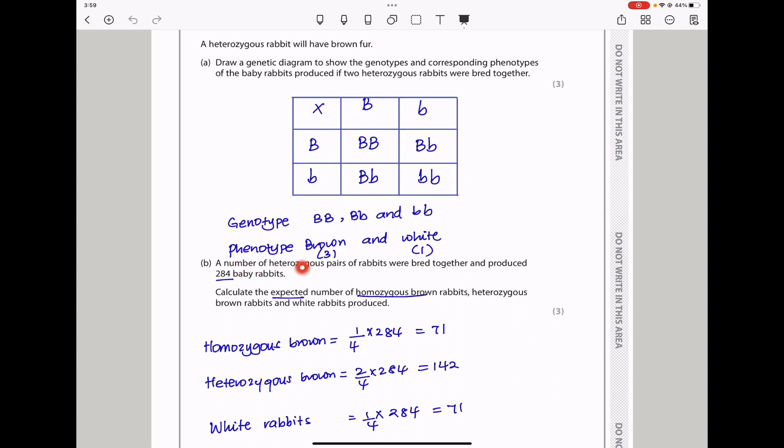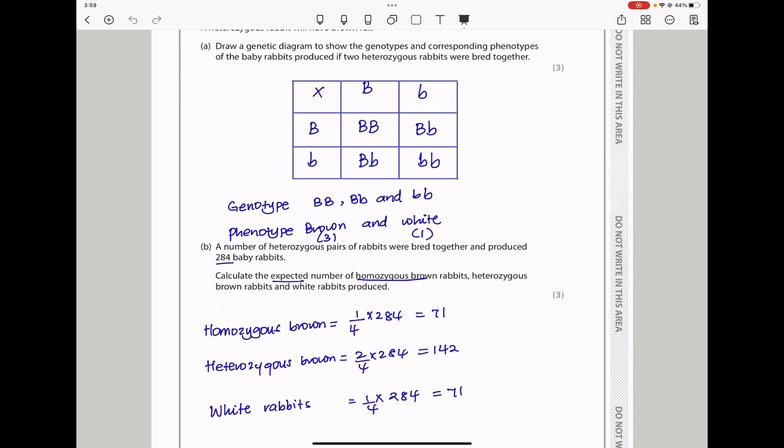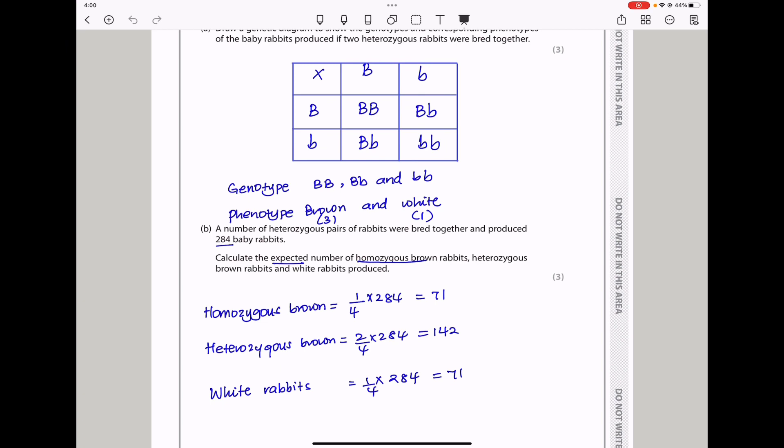Next they say a number of heterozygous pairs of rabbits was bred together and produced 284 baby rabbits. Calculate the expected number of homozygous brown rabbits, heterozygous brown rabbits, and white rabbits produced. Homozygous browns are going to be one in four, so one over four times the total, and that gives us 71. Heterozygous are going to be two out of four times the total, which gives us 142. And then the white rabbits are going to be one over four times the total, which gives us 71.